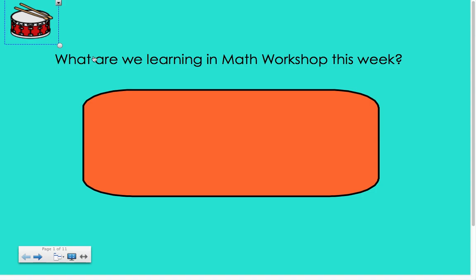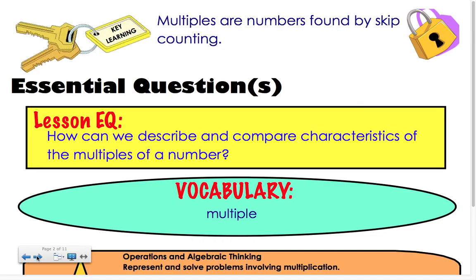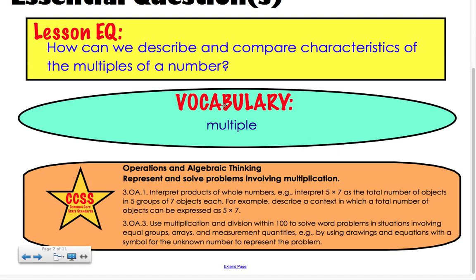What are we going to learn about in math workshop this week? It's all about multiples. Multiples are simply numbers found by skip counting. By the end of this session, I want you to be able to describe and compare characteristics of the multiples of a number. The vocabulary we're going to learn this week is the word 'multiple.' Our Common Core state standards tell us that every third grader needs to be able to use multiples in order to efficiently and accurately multiply.